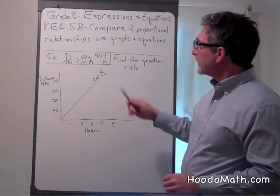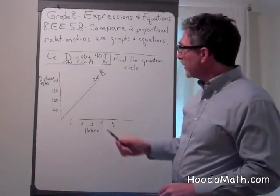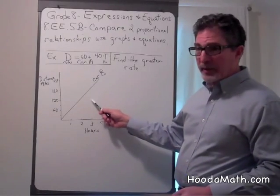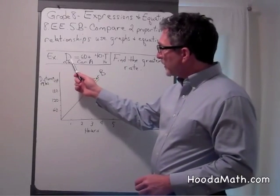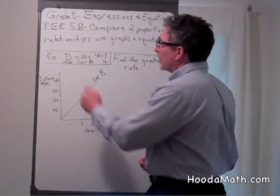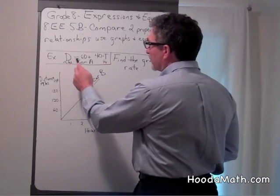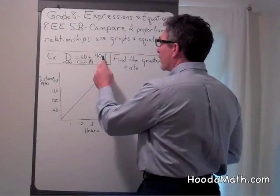One which is expressed as an equation, and one which is expressed as a graph. Now, this particular one says distance in miles equals 60 plus 40 times t.